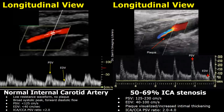In a 50 to 69% stenosis, the PSV will be between 125 to 230 cm per second and the EDV will be between 40 to 100 cm per second. The plaque will be visualized or increased intimal thickening will be seen, and the ICA to CCA PSV ratio will be between 2 to 4.